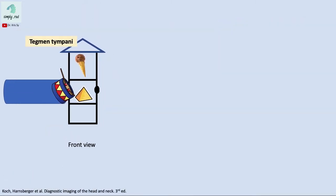Let's now focus on the middle ear. The middle ear can be likened to a three-story building where each floor has a prominent resident, except the first floor. Looking at the topmost floor, it has a roof called the tegmen tympani. This roof is the border between the middle ear and the meninges and brain above, so it is important and should be intact.